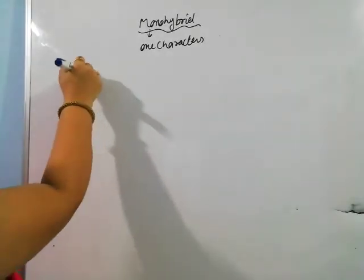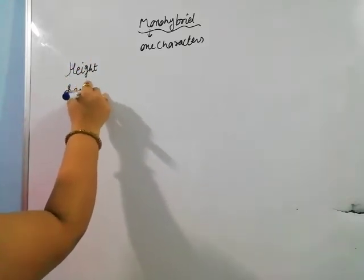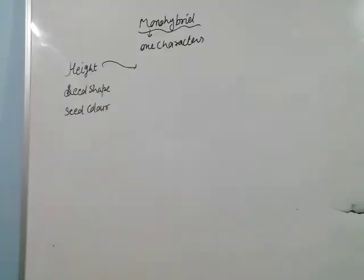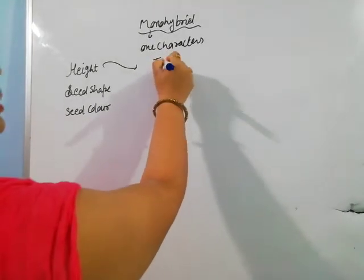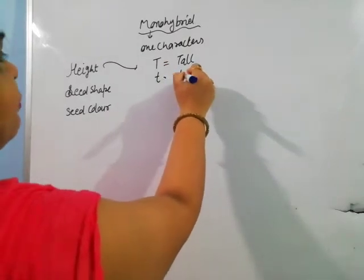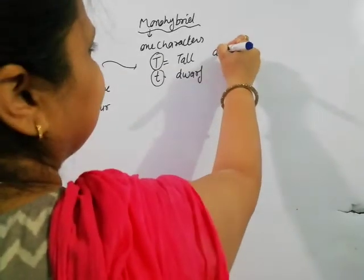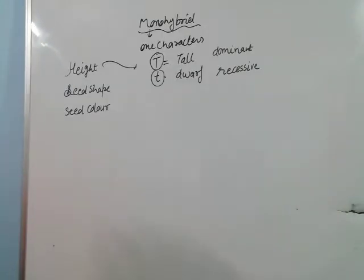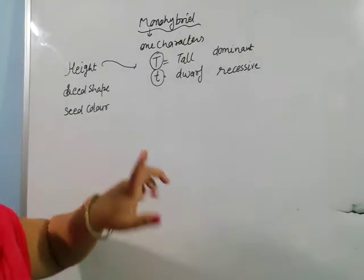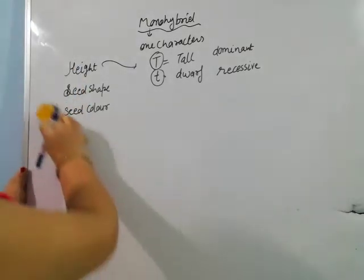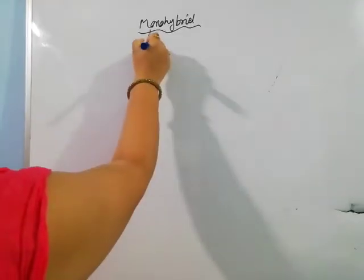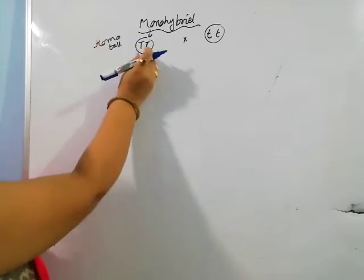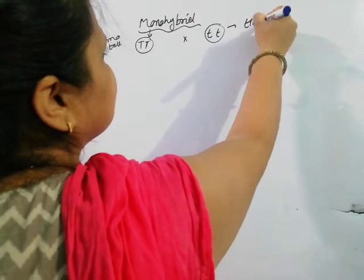In monohybrid cross, for example, they take the character of height, seed shape, and seed color. Most commonly used is the character of height. Capital T capital T, or small t small t, is called homozygous tall or homozygous dwarf, because both factors are the same — that is called homozygous.